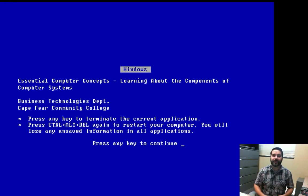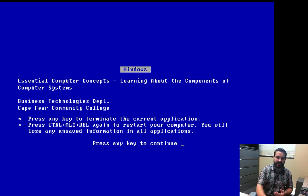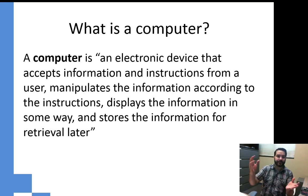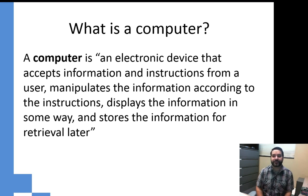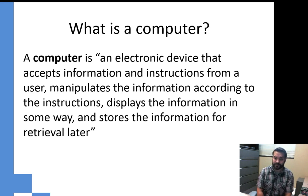In this lecture we'll be talking about essential computer concepts — what makes a computer a computer. From your textbook, here's the definition: an electronic device that accepts information and instructions from users, manipulates the information according to the instructions, displays the information in some way, and stores the information for retrieval later.